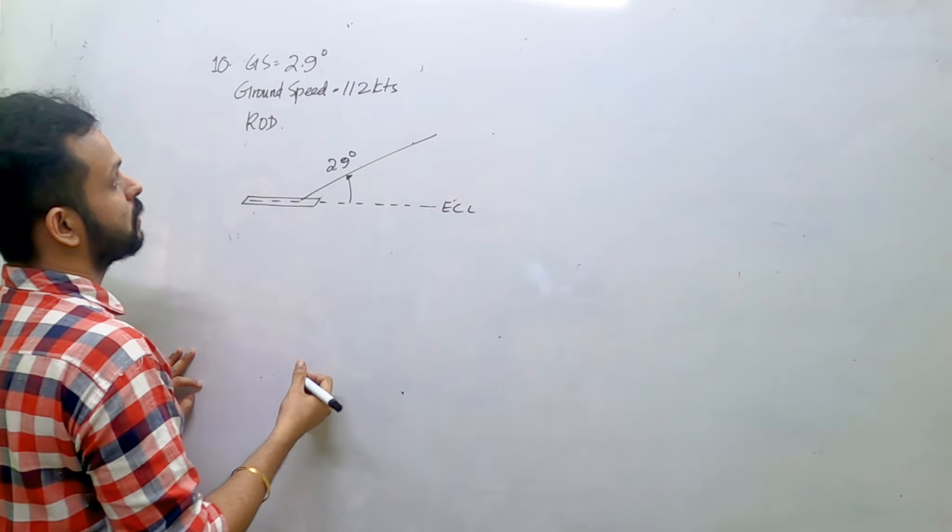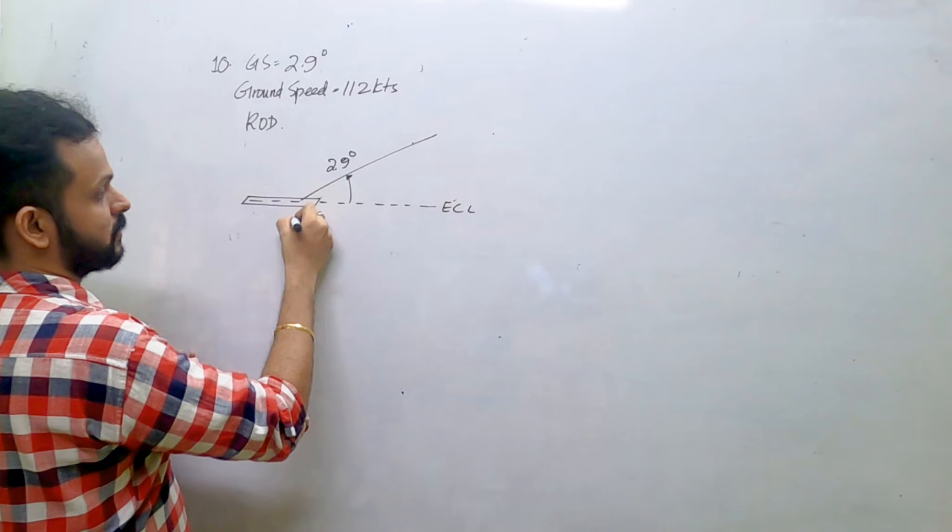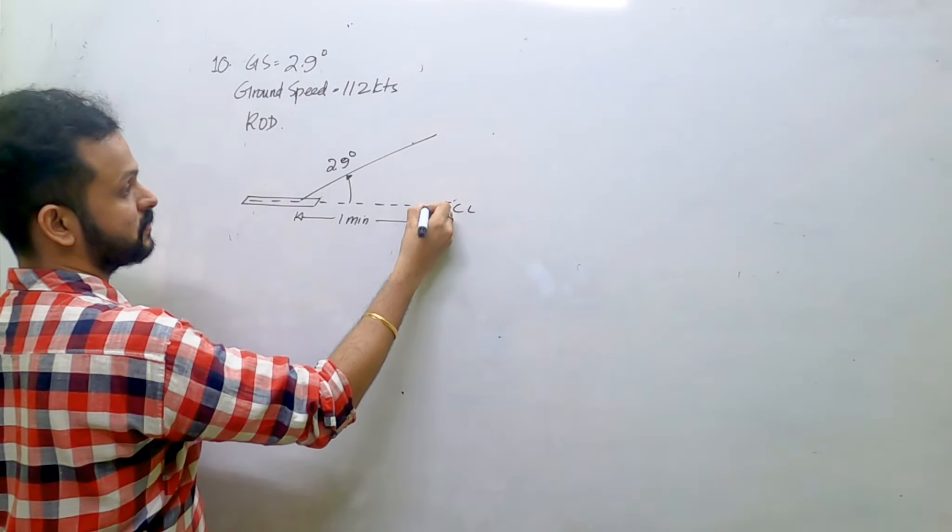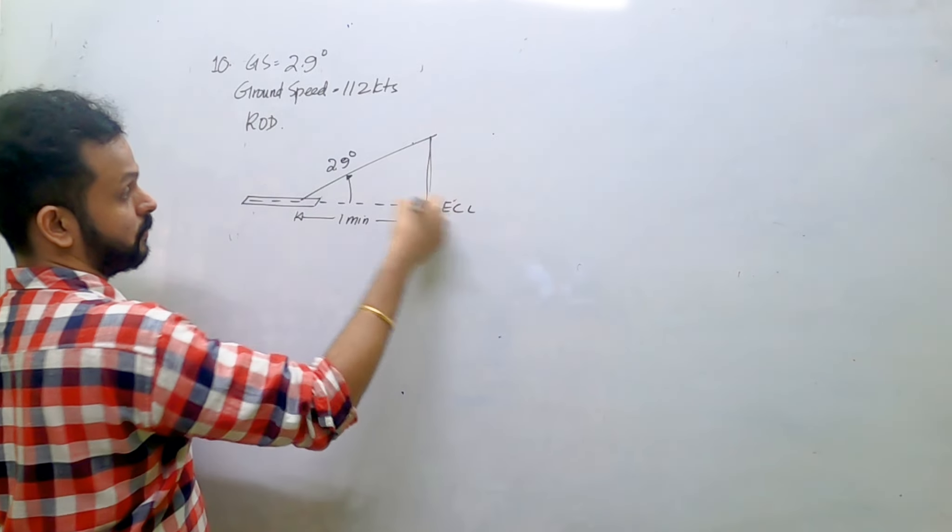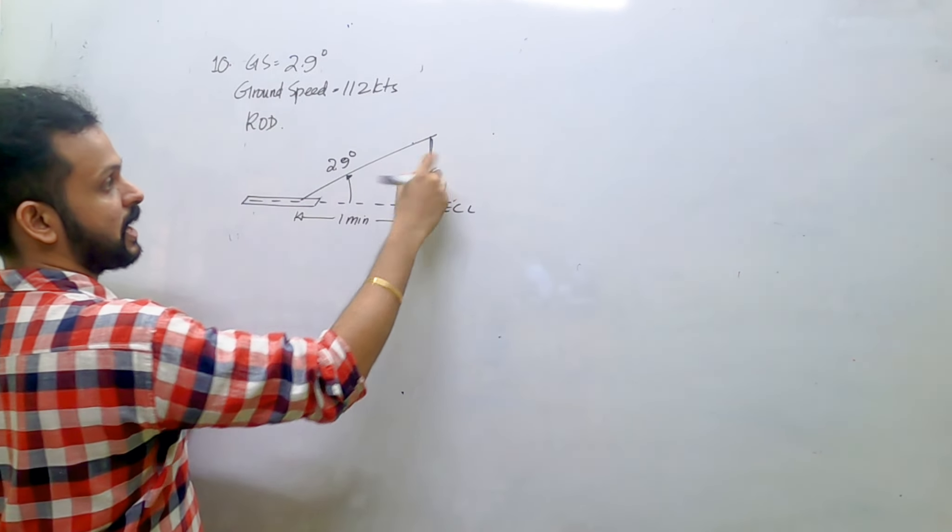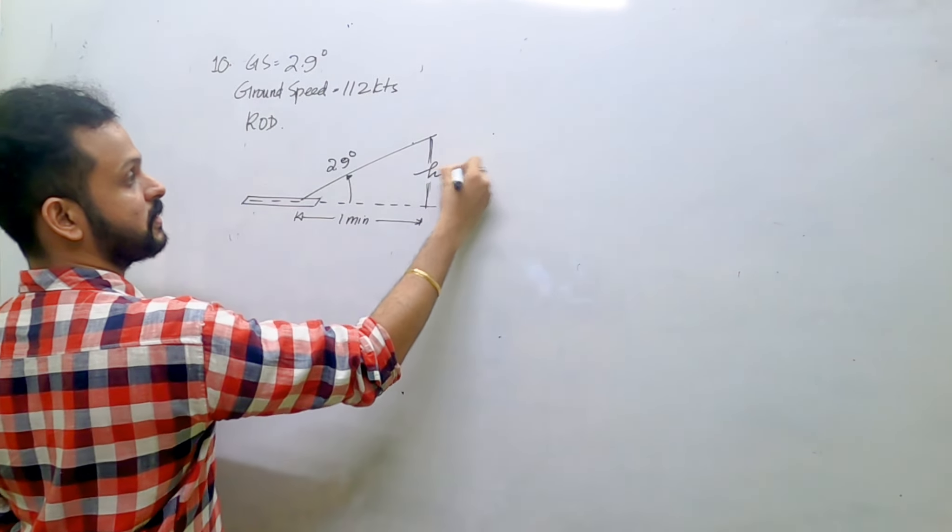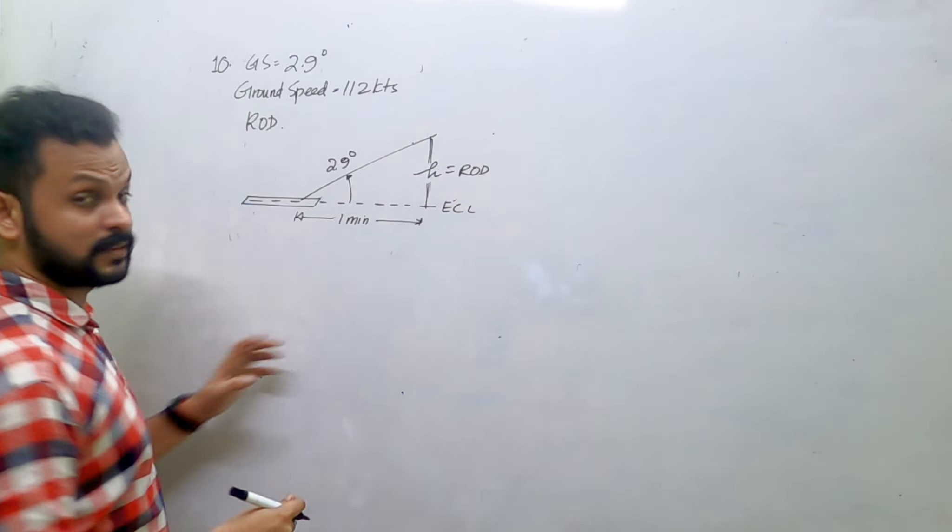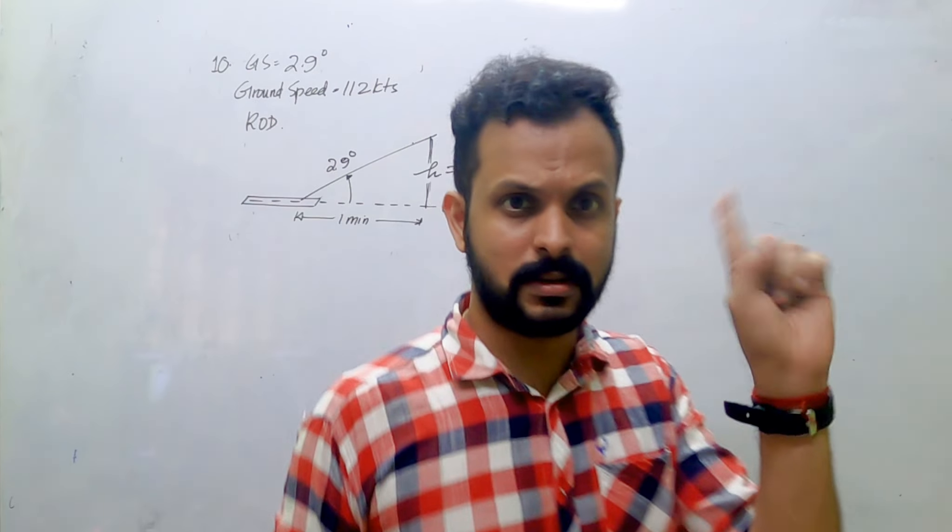You have to find out rate of descent. To find rate of descent, basically we have to first find out the one-minute distance from the threshold, from the touchdown point, and this height corresponding to one-minute distance is the rate of descent.